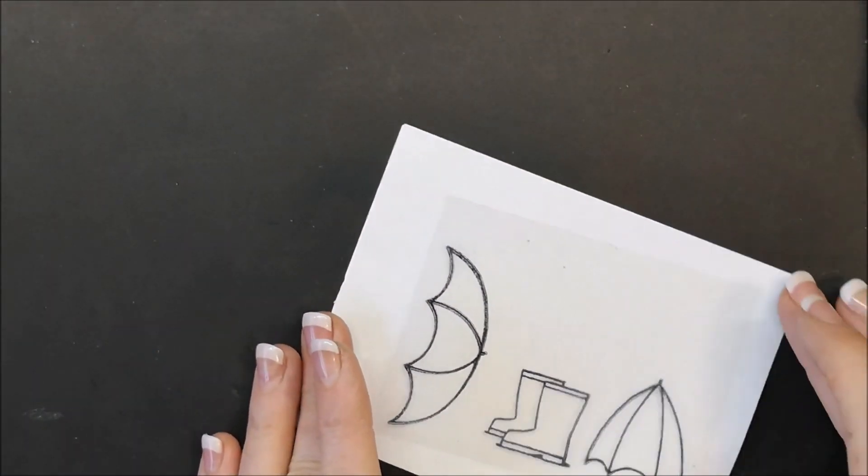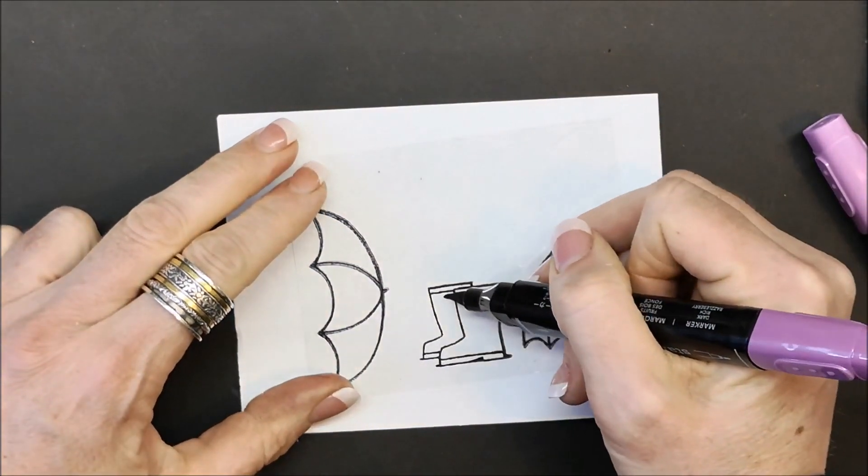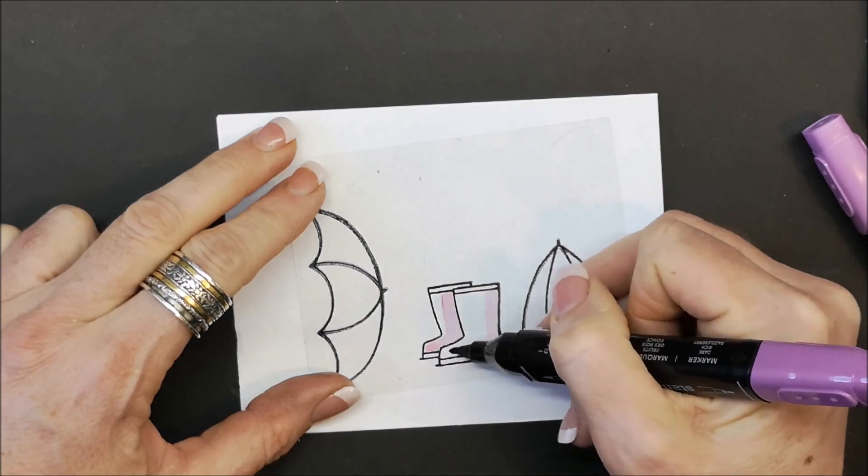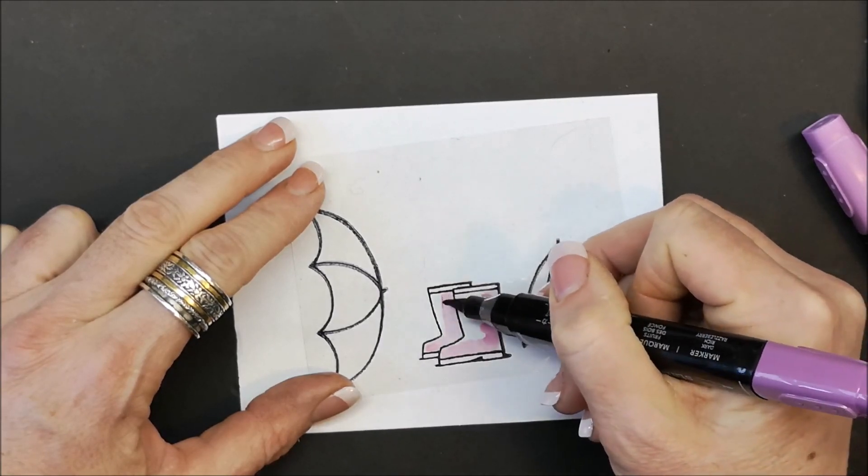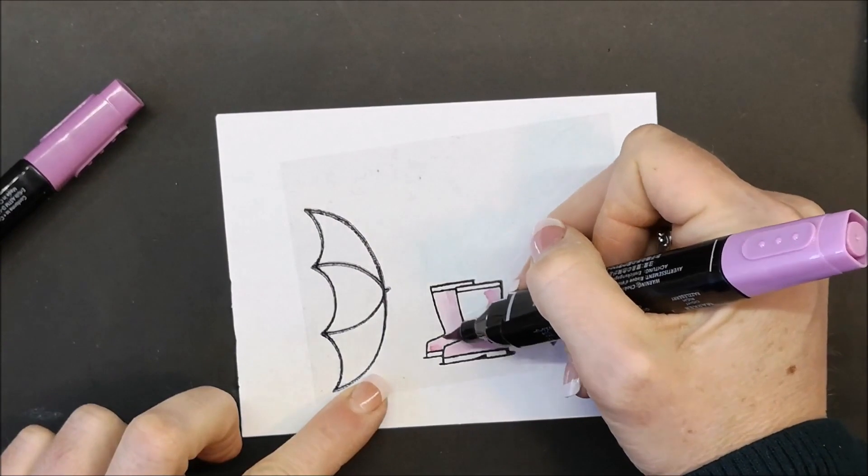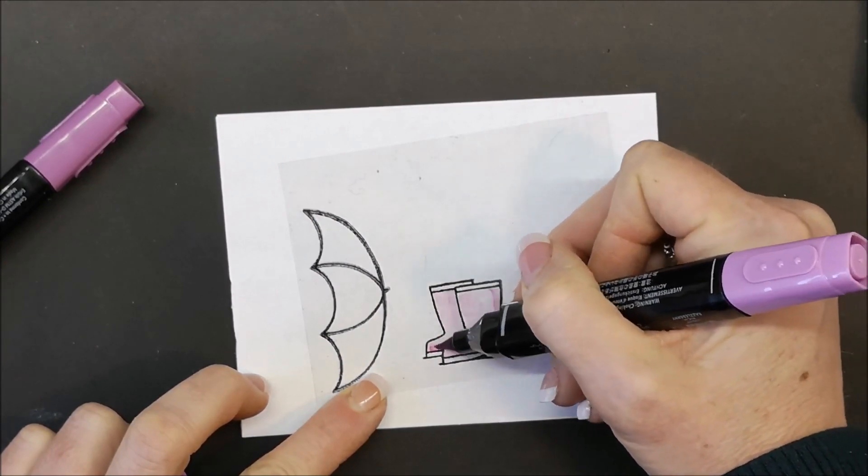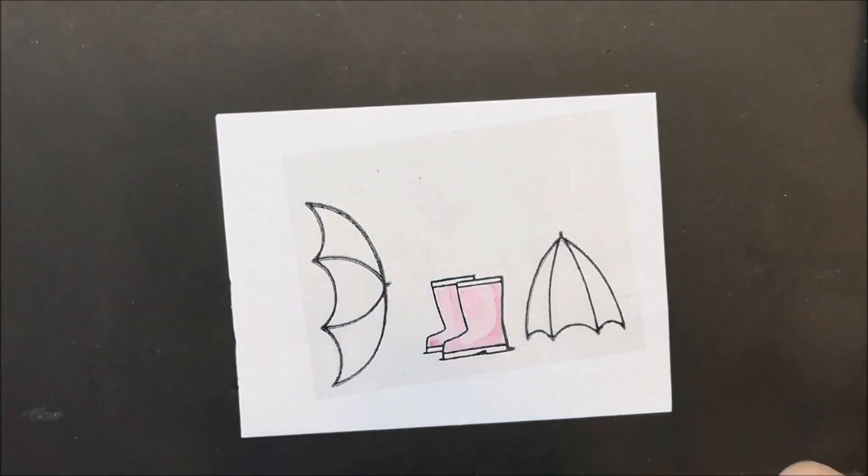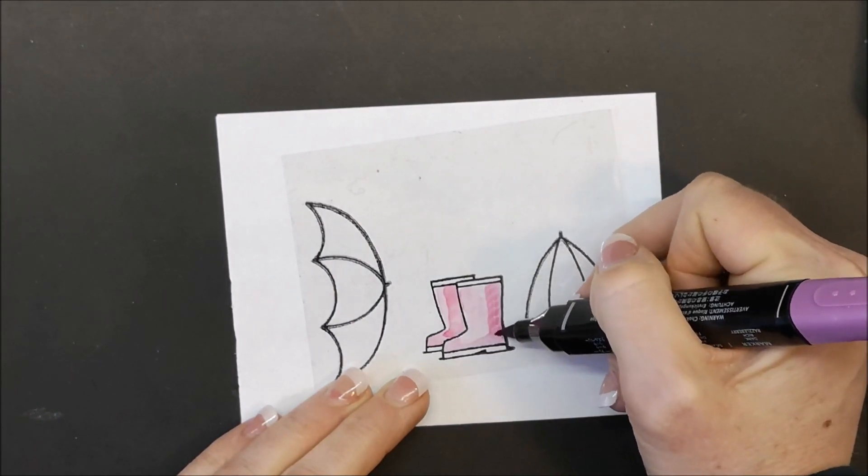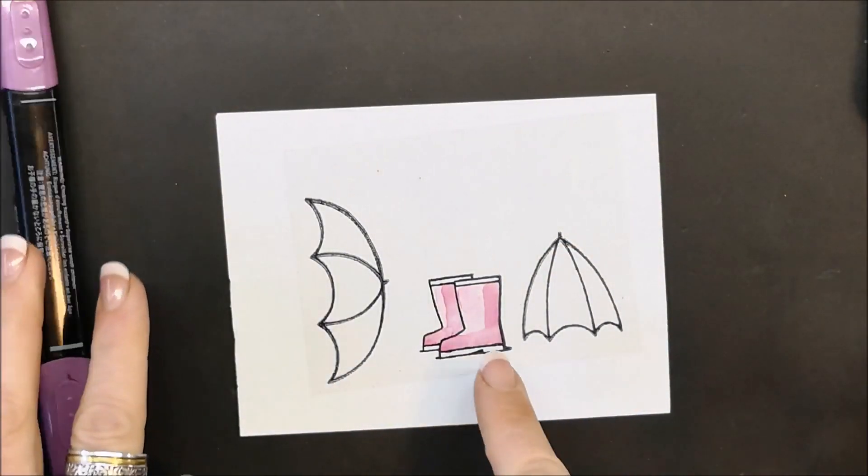I'm going to flip this over and bring in my stampin' blends. I'm going to start with the dark Rich Razzleberry first and color in my boots. When you use stampin' blends on window sheets the ink really moves around so you're just going to want to play with it. I'll pull in my light Rich Razzleberry and this alcohol ink works really well on the window sheets. You want to add layers, let it dry in between, then go back and add more ink to get it darker until you've got the look that you're going for.